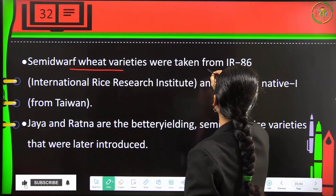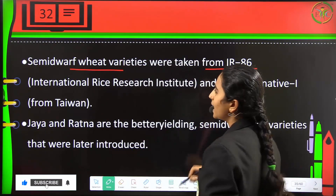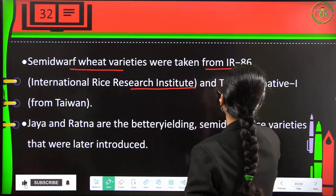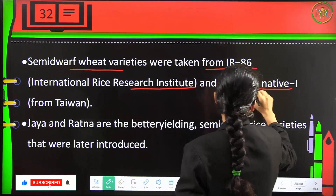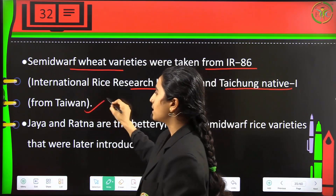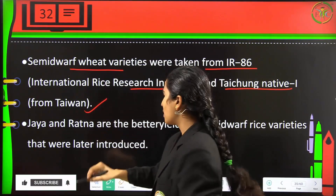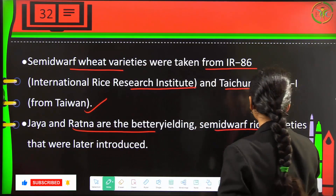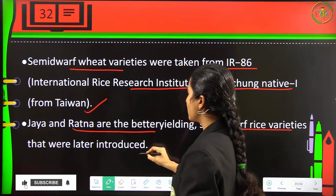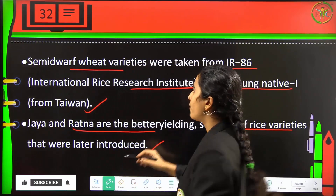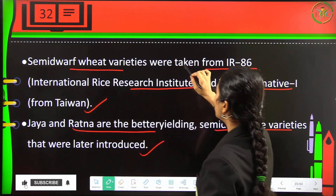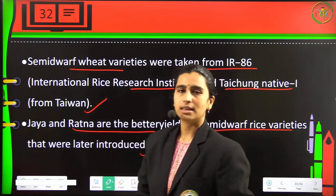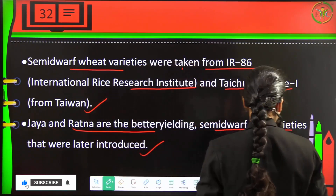Semi-dwarf wheat varieties were taken from IR8 — the International Rice Research Institute — and Taichung Native 1 from Taiwan. Jaya and Ratna are the better-yielding semi-dwarf rice varieties which were later introduced after the wheat varieties.